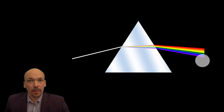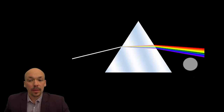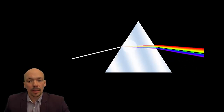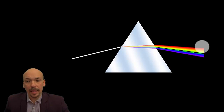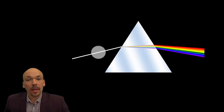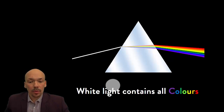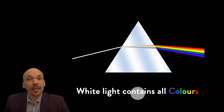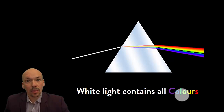You probably recognize this as the rainbow, which you see in nature. When it's raining and the sun is shining, the water drops are reflecting the light inside of them and then the rainbow appears. The rainbow shows you that all the colors are inside white light, and that's important to know.